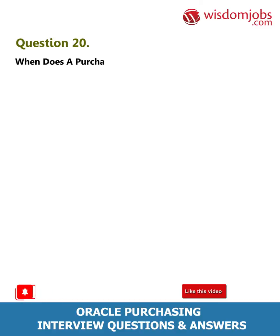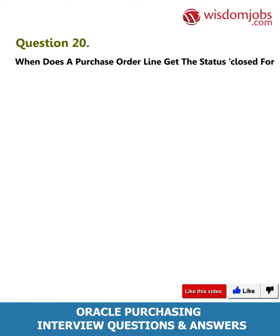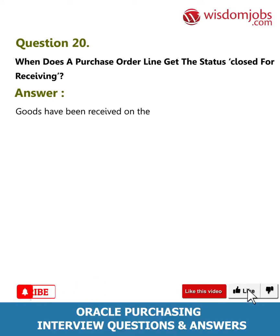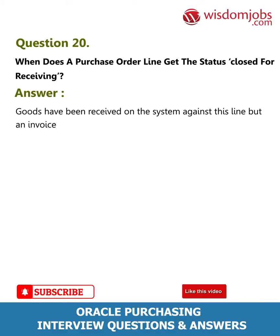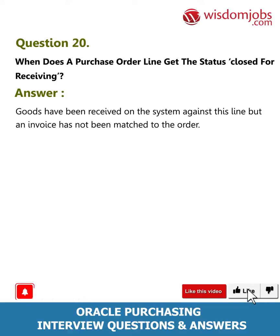Question 20: When does a purchase order line get the status 'closed for receiving'? Answer: Goods have been received on the system against this line, but an invoice has not been matched to the order.